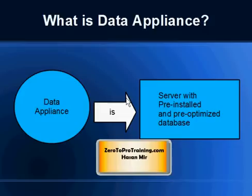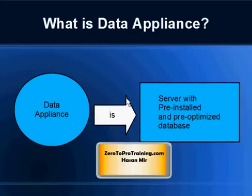Another option is to buy a data appliance from a vendor — you get hardware as well as a database already installed on that hardware. But it's more than just installation: the hardware is specifically designed to work with that database software, and the database is tuned to work with that hardware. Every component — memory, CPU, and the whole works — is tuned to work together. That is exactly why the term 'appliance' is used: the software and hardware are married to each other.